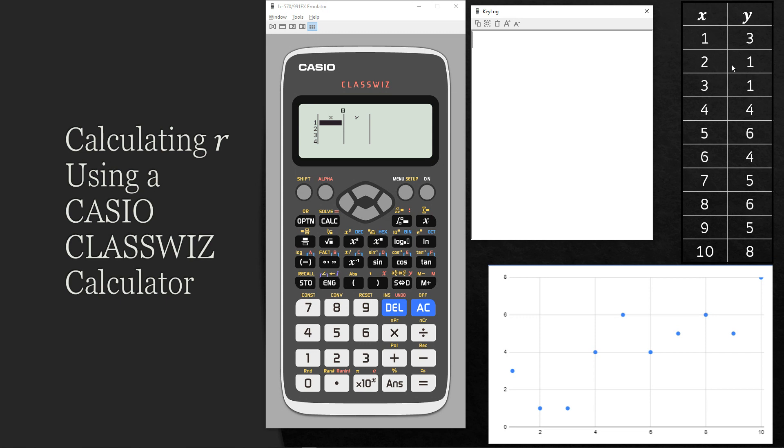So first, going to enter all these values into the calculator. First one, x value of one. Press one, press equals. That enters our x value of one. This is just the way the calculator seems to work. Once we put all the x values in, we'll go back and put the y values in. So it's each x value followed by the equals button.